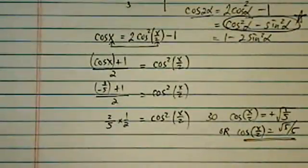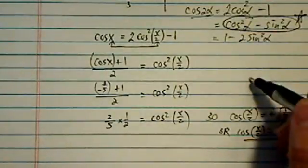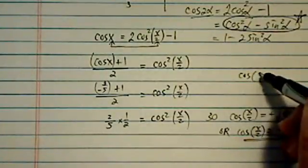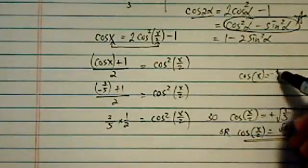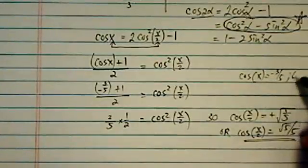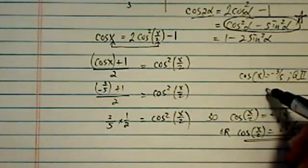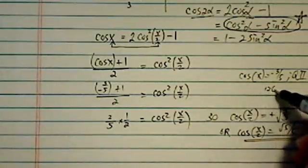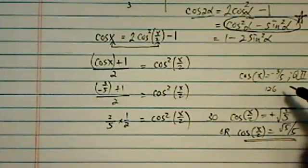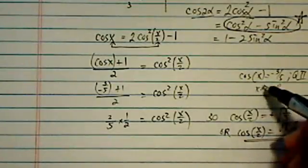Now for this particular problem, you can actually find what x is. If you know cosine x is equal to minus 3 over 5 and it's also in quadrant 2, the angle turned out to be, I think it's 126 degrees or so, roughly in that.